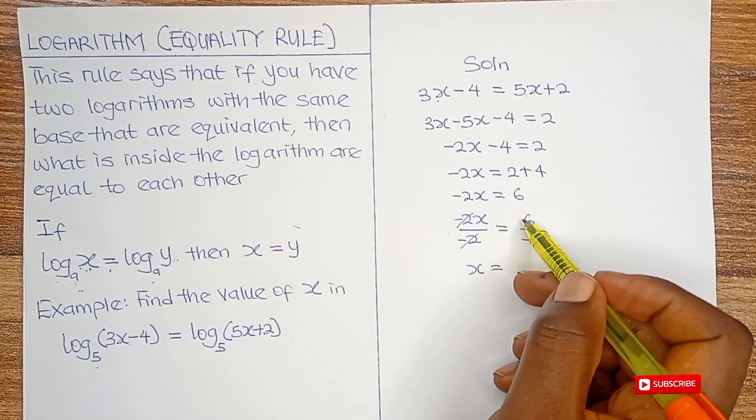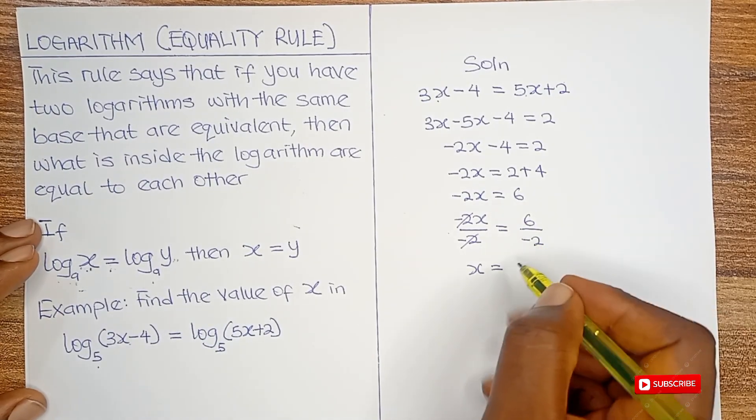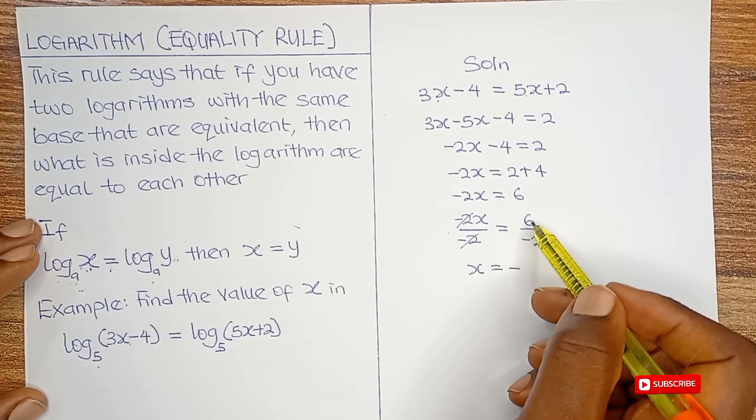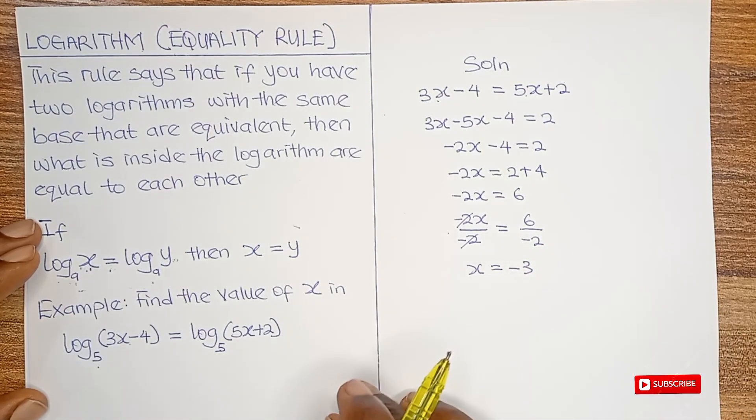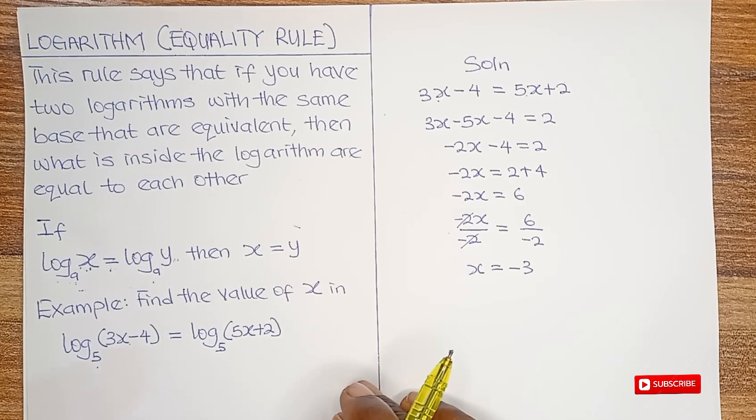there's an invisible positive sign here. So positive divided by negative is going to give us negative, and then 6 divided by 2 is going to give us 3. That's the simple answer to this question.